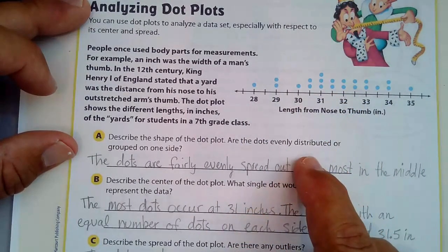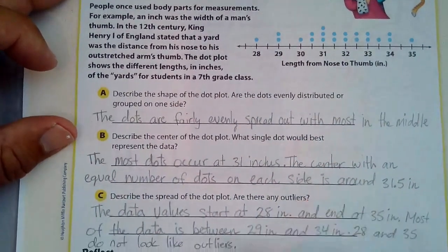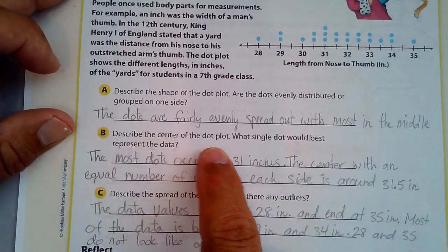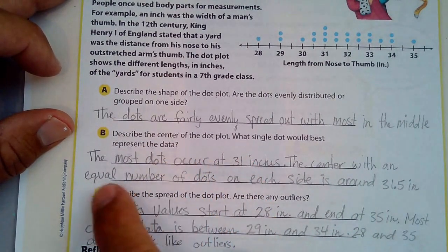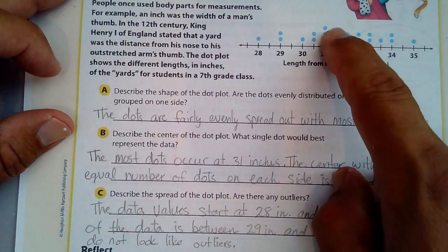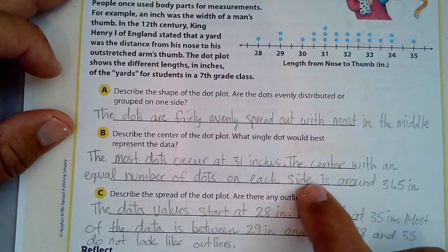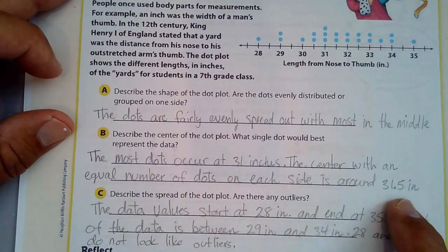Are they evenly distributed? That would be a discussion of the shape. Describe the center of the dot plot. What single dot would best represent the data? Well, the most data occurs at 31 inches. That's the highest frequency right there. The center, with an equal number of dots on each side, is around 31.5.